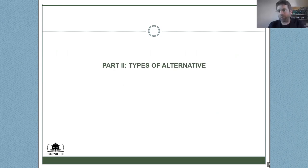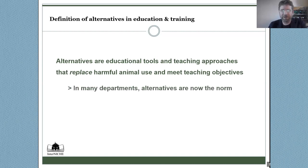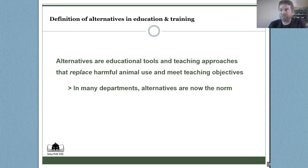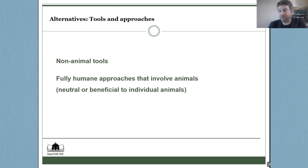The second part of the presentation looks at the different types of alternatives that are being developed and implemented across the world. We can define alternatives as tools and approaches that replace harmful animal use and meet teaching objectives. In many departments these are now the norm — the word 'alternatives' is useful to help bring about change, but in fact for many teachers these are just standard, normal, and better ways of teaching and for students to learn. We can recognize both non-animal tools and fully humane approaches that do involve animals but are neutral or beneficial to those individual animals.